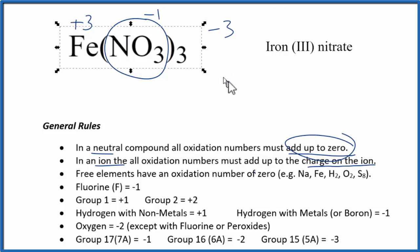So let's clean this up a little bit. We now know that iron is plus three, and we know, if we look at our list here, that oxygen is always minus two, with just a few exceptions. So each one of these oxygens here is minus two.